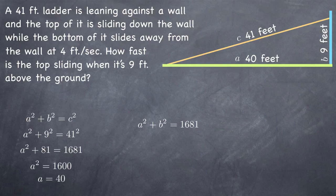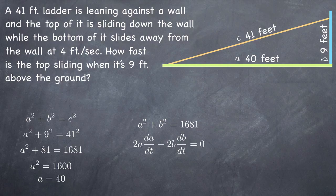Then we'll differentiate both sides of our equation using implicit differentiation. Remember that we'll have to multiply by da dt when we take the derivative of a and we'll multiply by db dt when we take the derivative of b. We know that a, the distance between the wall and the base of the ladder, is 40. We know that da dt, the rate at which a is changing, is 4 feet per second.